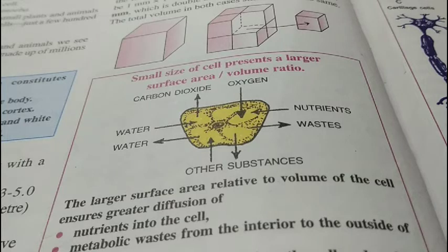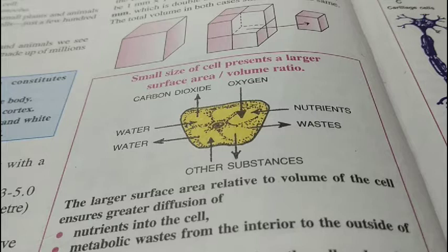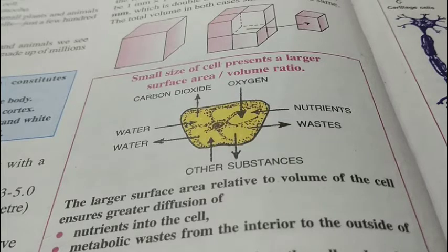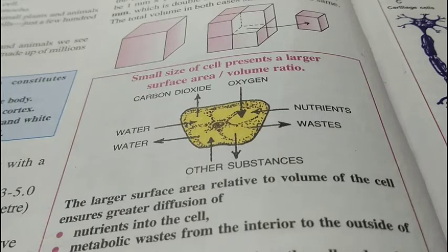The largest cells are birds' eggs, among which the ostrich egg is the largest single cell. Cells can also be of different shapes — some may be disc-like, some may be polygonal, some could be rectangular or cuboid, and some are thread-like. All these different kinds of cells are found in nature.